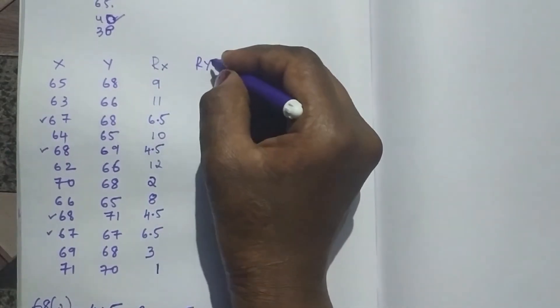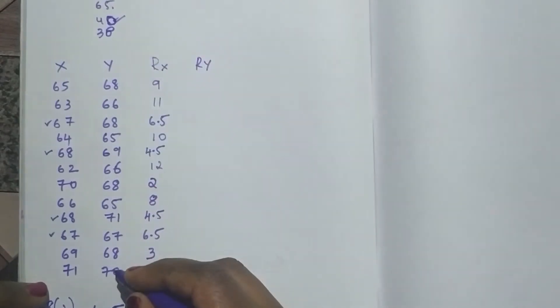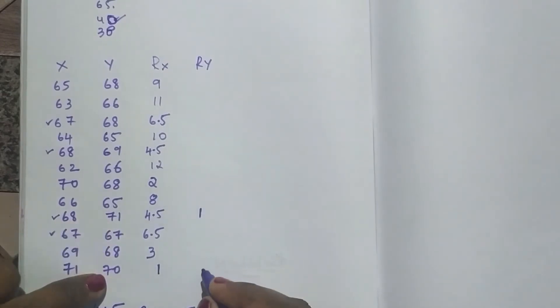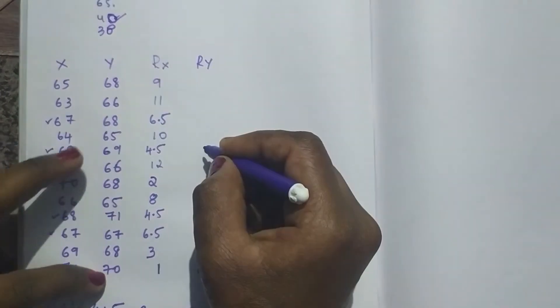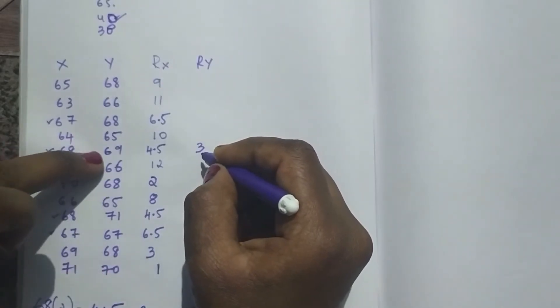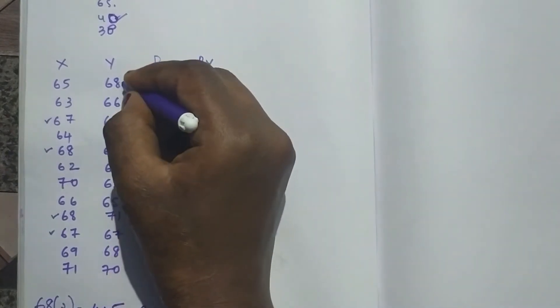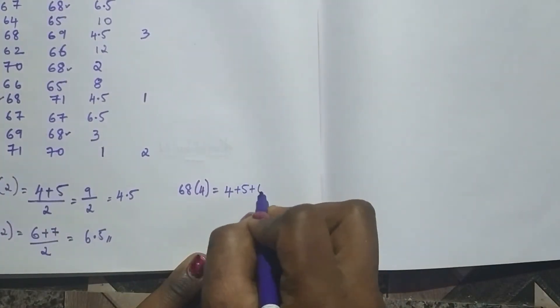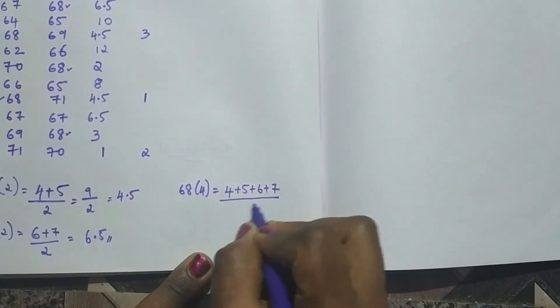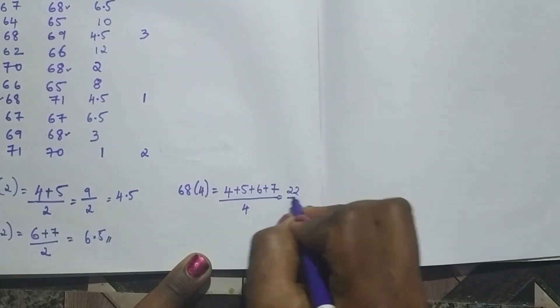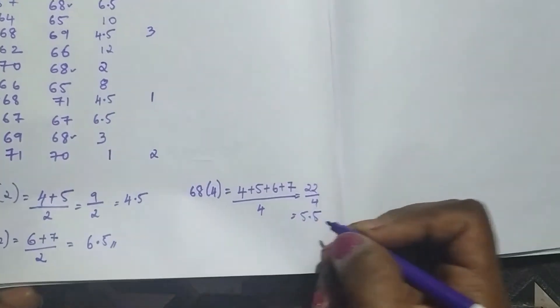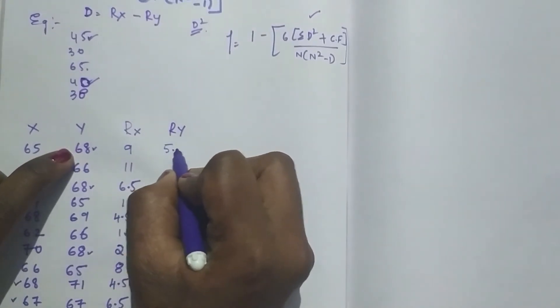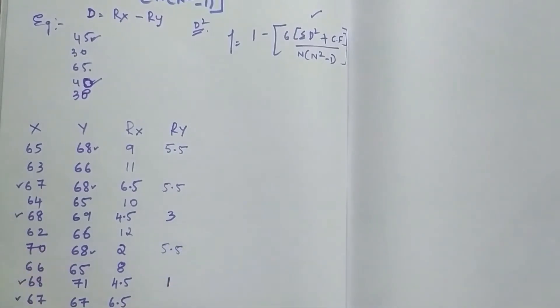Now let's rank for y. Find the highest number: it's 71, so first rank. Second rank is 70, third rank is 69. After 69, we have 68, which is repeated four times. After ranking up to 3, the next four ranks are 4, 5, 6, and 7. So (4+5+6+7)/4 = 22/4 = 5.5. All four occurrences of 68 get rank 5.5.